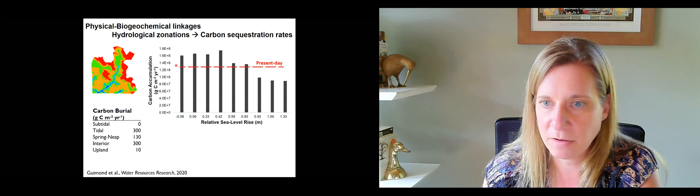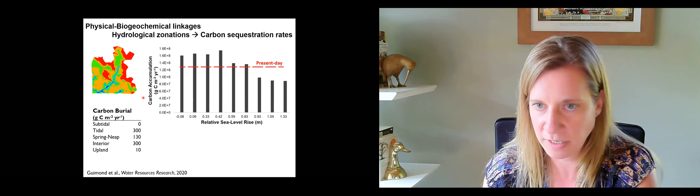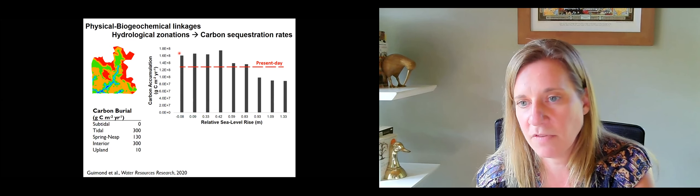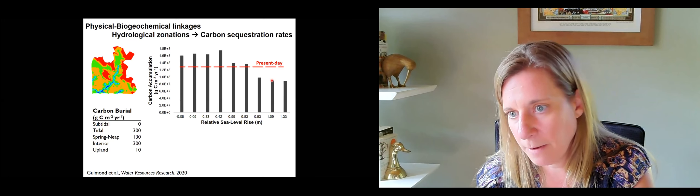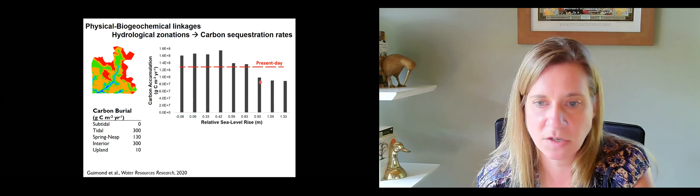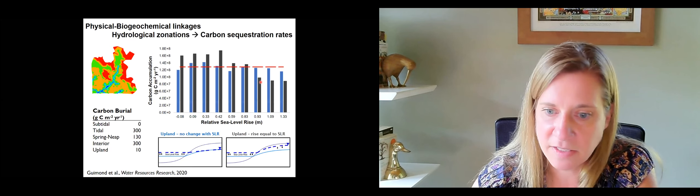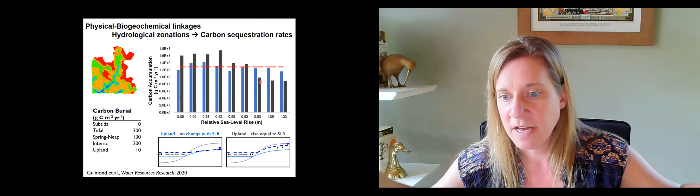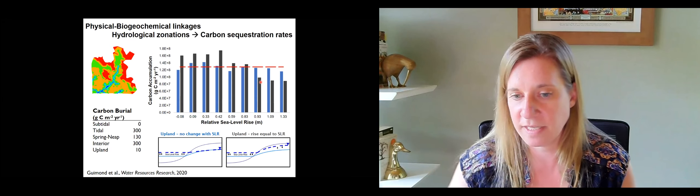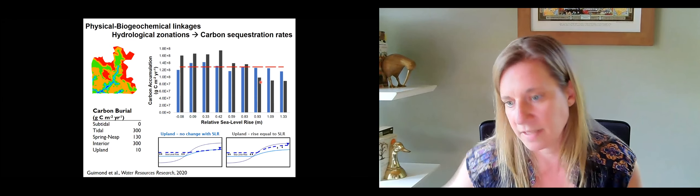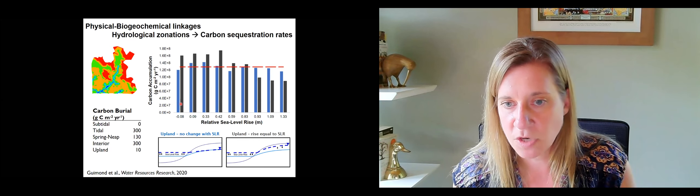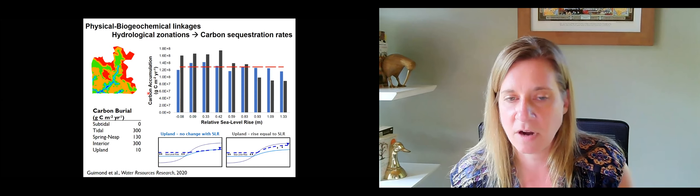With moderate sea level rise, you actually get an increase in the amount of carbon accumulation, but there's a tipping point at which too much sea level rise causes it to decline. There's also an interesting effect of the broader hydrological context: there's a difference between a scenario where the upland water table doesn't rise versus when it does rise, which moderates the impact on the carbon accumulation rate.